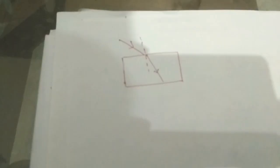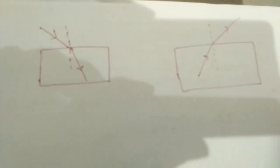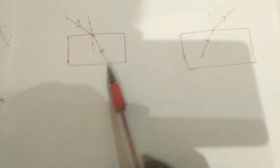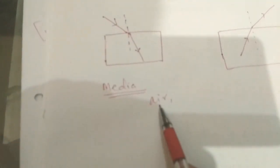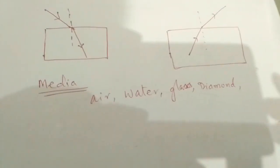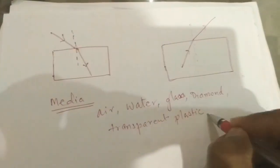Let's look at some ray diagrams — you have already studied this in class 10, but with fewer details. Considering this is a glass slab: this is called the incident ray, this is called the normal, this is called the refracted ray. This shows when the light is moving from denser medium to rarer. The optical media can be air, water, glass, diamond, transparent plastic, and so on.